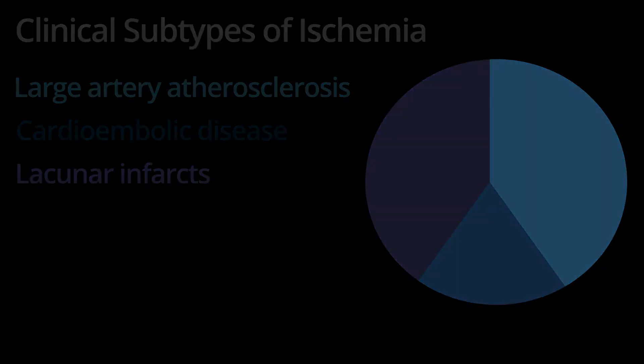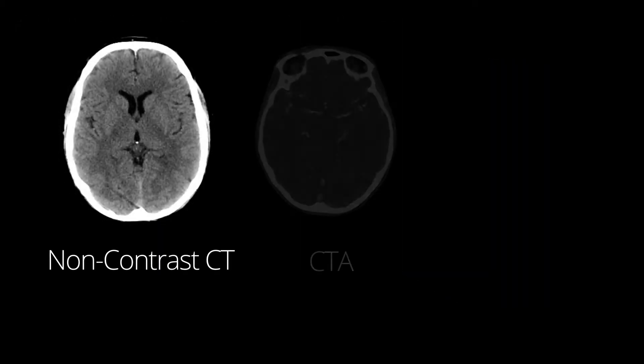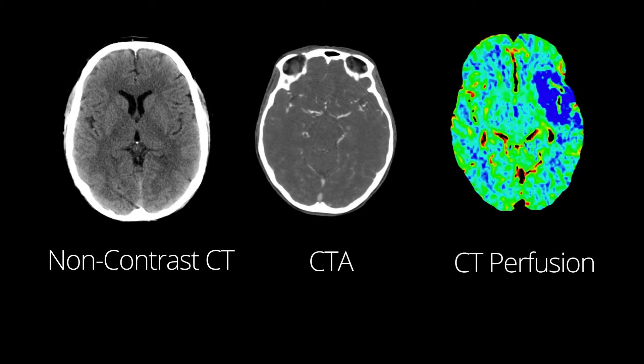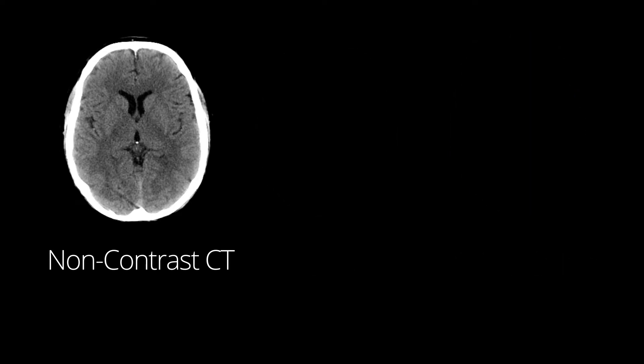Imaging of acute stroke is most commonly performed with three studies: non-contrast head CT, CTA, and CT perfusion. MRI is far more sensitive for ischemia, but CT is still used because of its availability, low cost, and ability to get the patient in and out of the scanner rapidly. This lecture will focus on non-contrast CT.